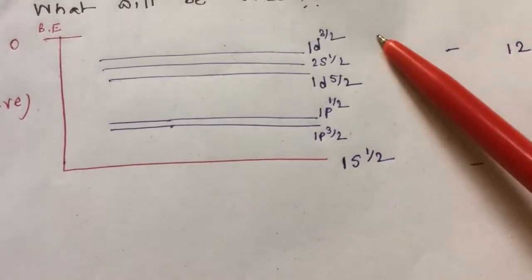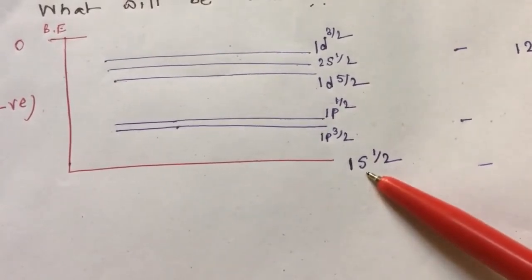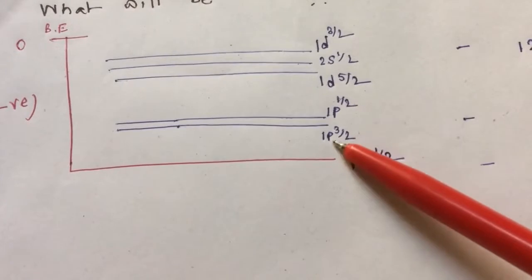This is the order of the state. Then we will write just like 1s, with J value 0 and 1.